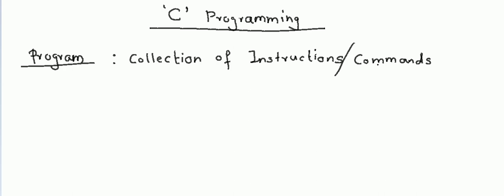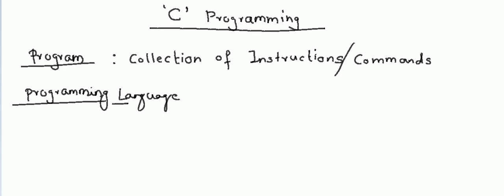The next question is: what is the purpose of a programming language? We just saw what a program is, so now what is the concept of a programming language and why are programming languages required? As the name itself suggests, it is a language. The purpose of any language is to communicate with each other, so programming languages are used to communicate with a computer — human beings interact with a computer using programming languages.